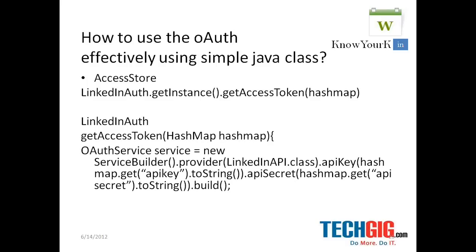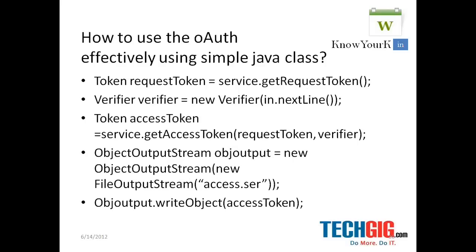This access token has been accessed through OAuth services. Basically you have this service builder and provider to access the LinkedIn API class where you pass these hash map values and get API calls from this hash map table, where you get the API secret key as well. You get the OAuth service and you get the request token out of the OAuth services. The request token object is then verified across the users who sign in to the OAuth flow.